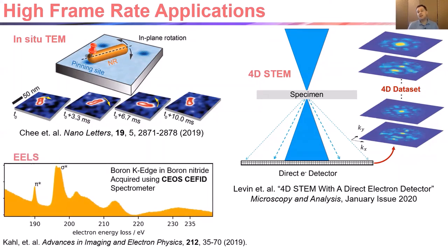Finally, there's electron energy loss spectroscopy. Direct Electron is partnering with CEOS, the company well known for building aberration correctors for TEM, and who now also make energy filters. The DE16 camera can be placed behind the CEOS energy filter, allowing you to perform energy filtered TEM imaging and EELS on our camera.